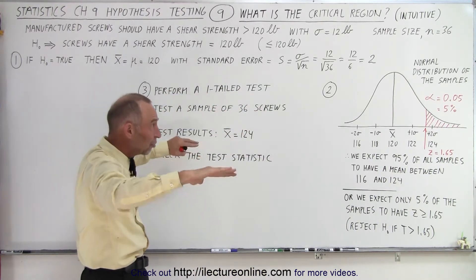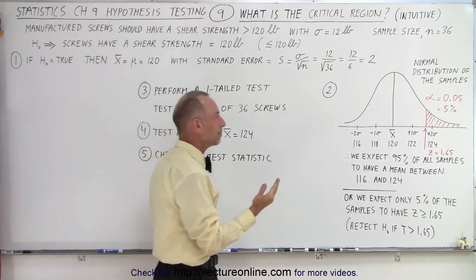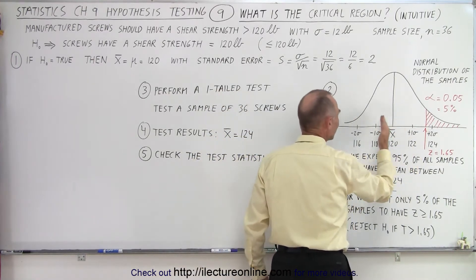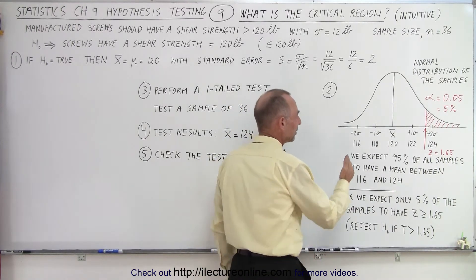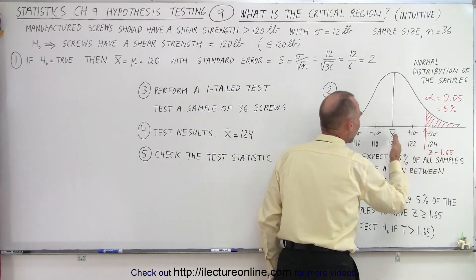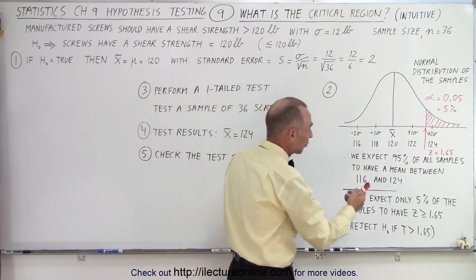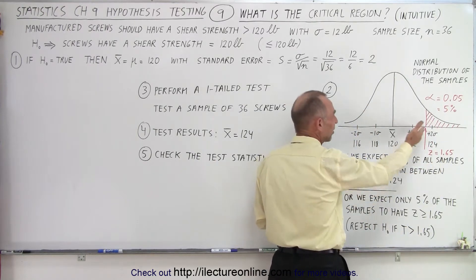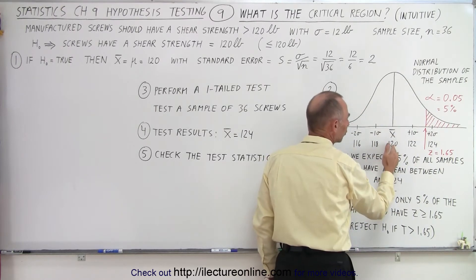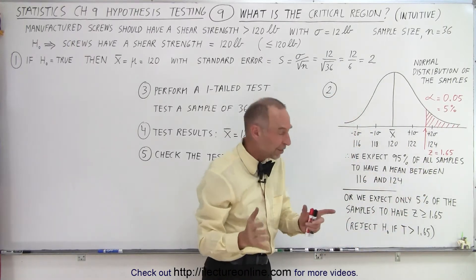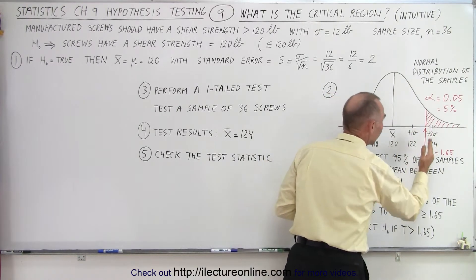What that means is that the distribution of all the samples — let's say we take a number of samples of 36 screws — will have a range or variety of means. If we look at plus or minus 2 sigma away from the mean, where sigma is essentially the standard error, and if the mean of all the samples would be 120, then 95% — because plus or minus 2 sigma covers 95% — of all the means would fall between 116 and 124.